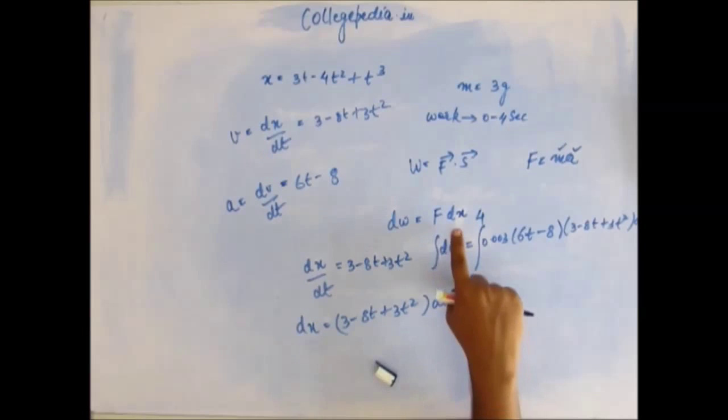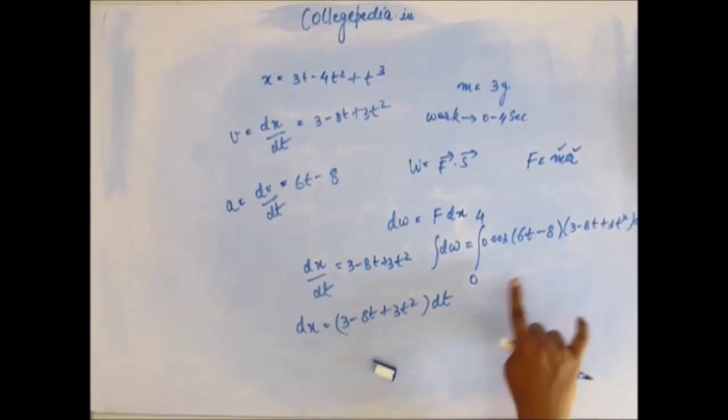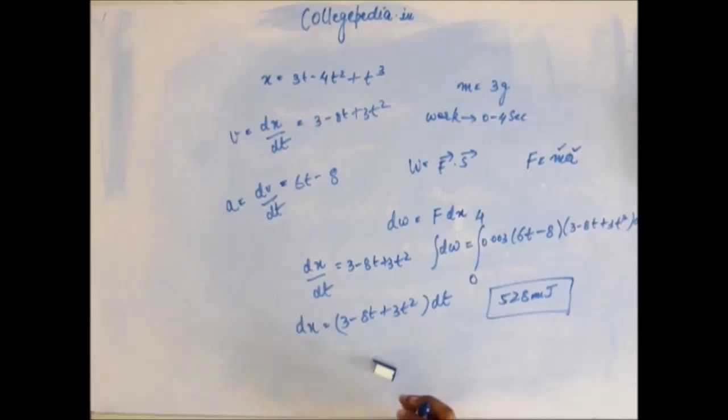I mean this was the major thing in this problem. You have to replace dx by this. Now from here, you just have to open the brackets, find the polynomial integration, put the limit, get the answer. The answer would be 528 millijoules. And congratulations to all of those who got this, you are doing really well.